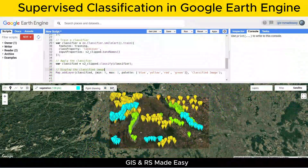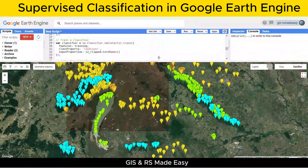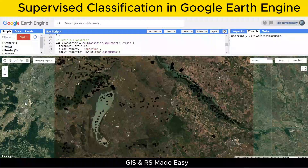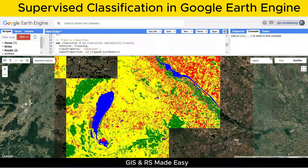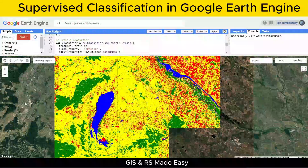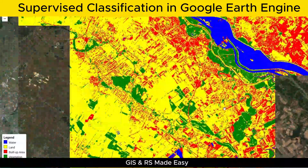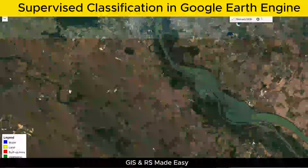Hi everyone. Today, we're going to walk through how to perform supervised classification in Google Earth Engine using a decision tree classifier called SmileCart. Let's dive right into the code and see how we can classify land cover using Sentinel-2 imagery.